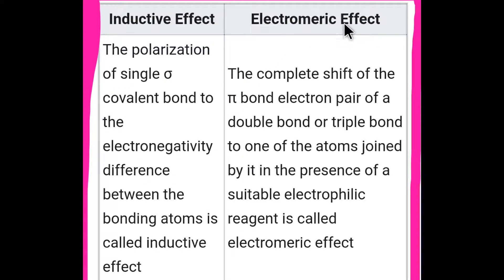On the other hand, the complete shift of the pi bond electron pair of a double bond or triple bond to one of the atoms joined by it in the presence of a suitable electrophilic reagent is called electromeric effect.